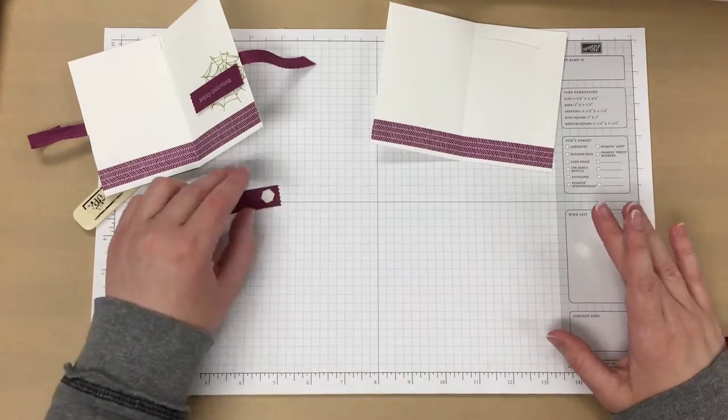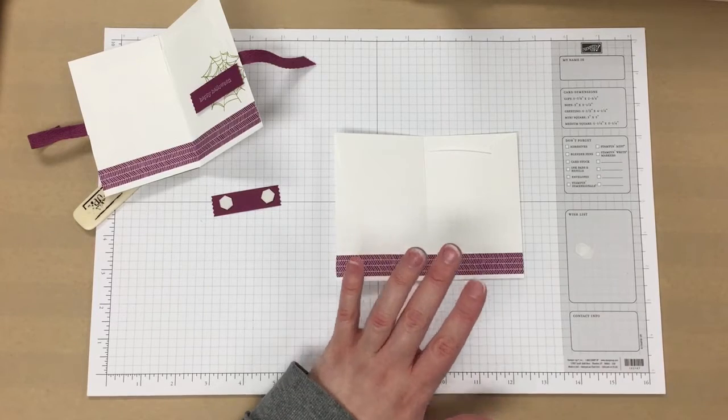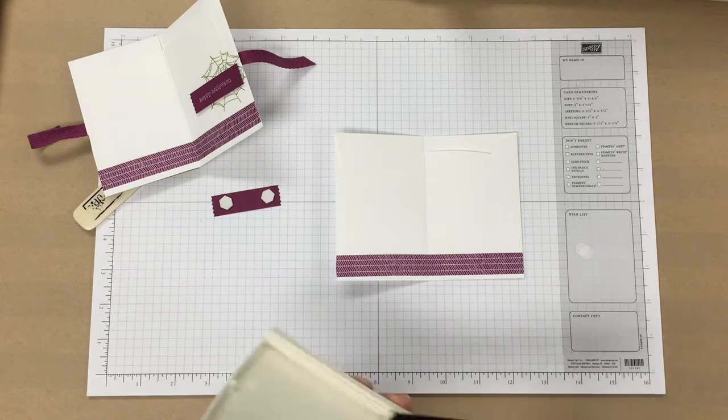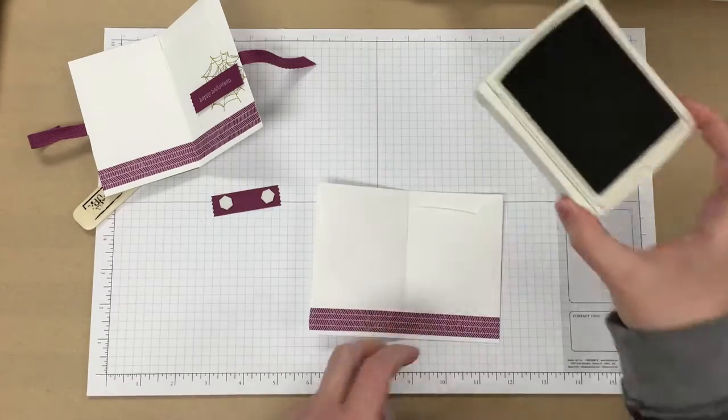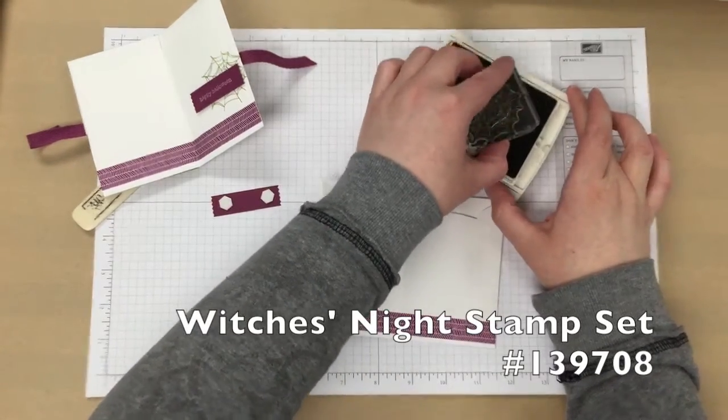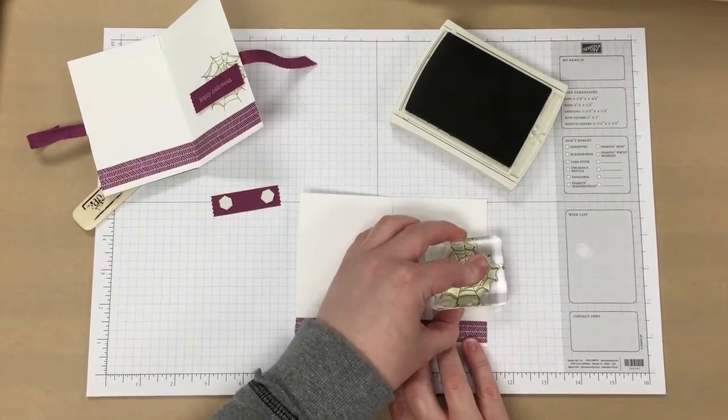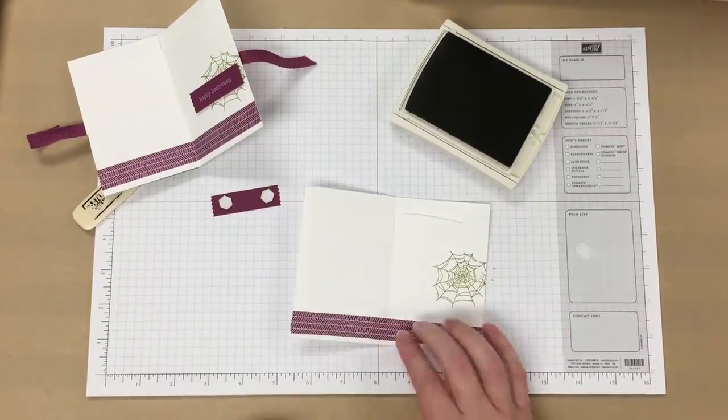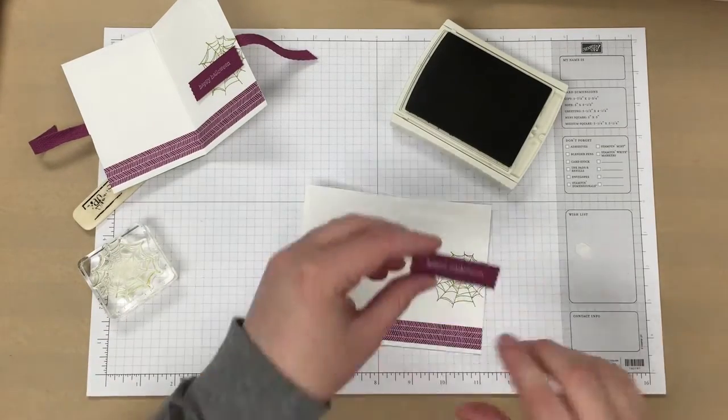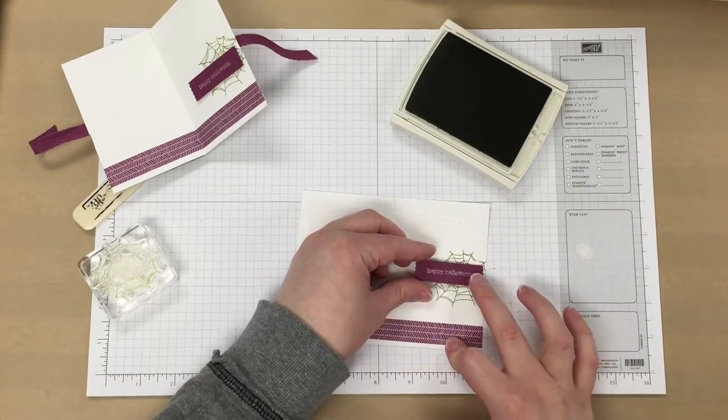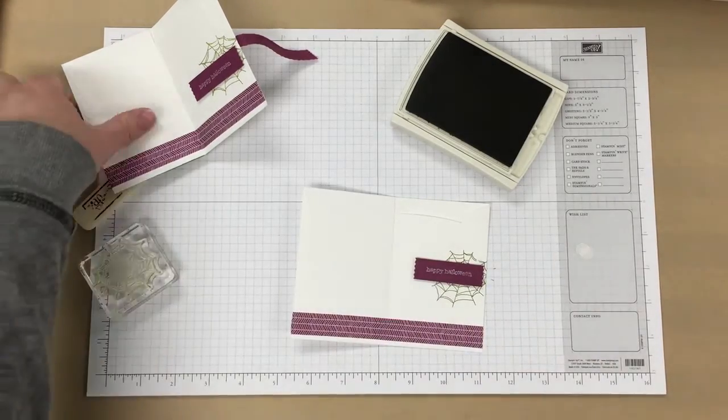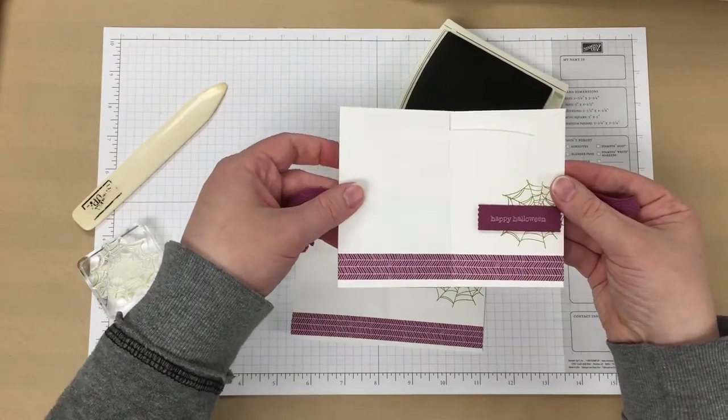Then we're going to add some dimensionals to that. One last thing, I'm going to use some old olive ink and the spiderweb image from the witches night stamp set. We're just going to stamp that little area like that and add the label to it. As you can see, we finished designing the inside of it, just going to close the pouch up.